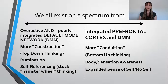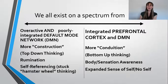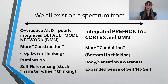We all exist on a spectrum from a poorly integrated default mode all the way to a well-integrated one. A person who does more activities that cultivate interoception — like qigong or the wheel of awareness exercise — that's going to help the default mode. That's why we want to be mindful of social media and other things that cause the default mode network to become stronger.